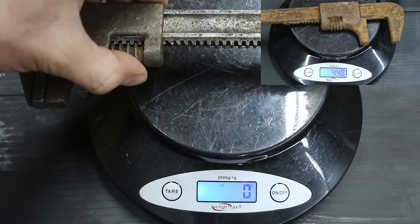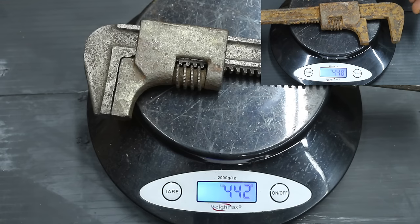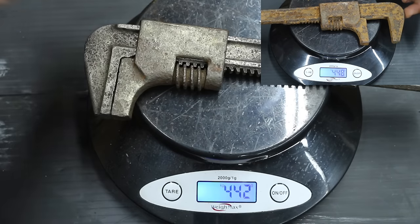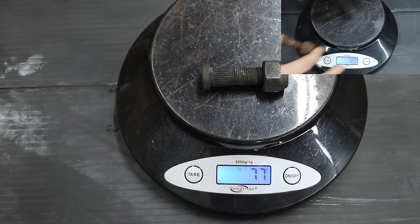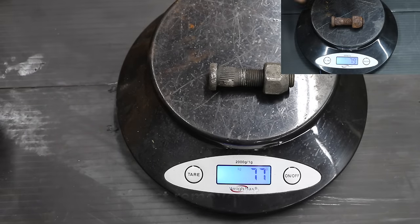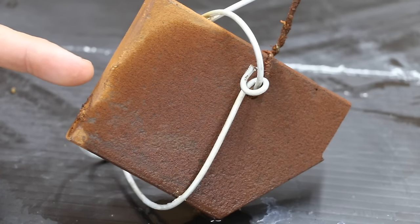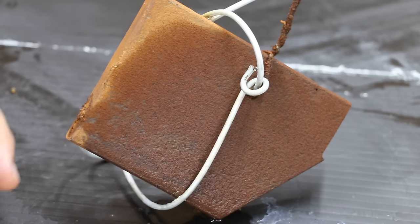The wrench started off at 448 grams, and it now weighs 442 grams. The loss is 6 grams. The bolt that went through electrolysis now weighs 77 grams. The bolt that was soaked in Evapor-rust also weighs 77 grams. This is the sacrificial piece of metal we used during the electrolysis process, and as you can see there's a lot of rust that's accumulated on it.